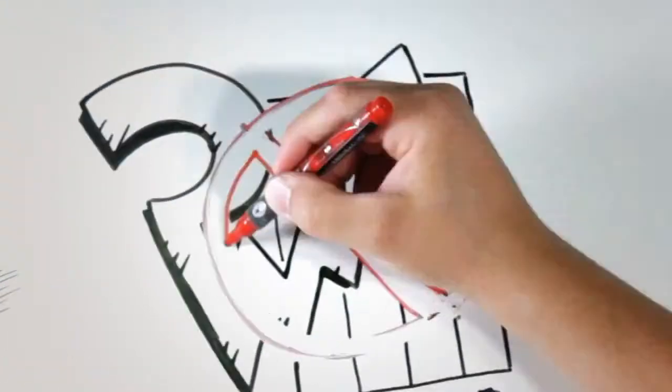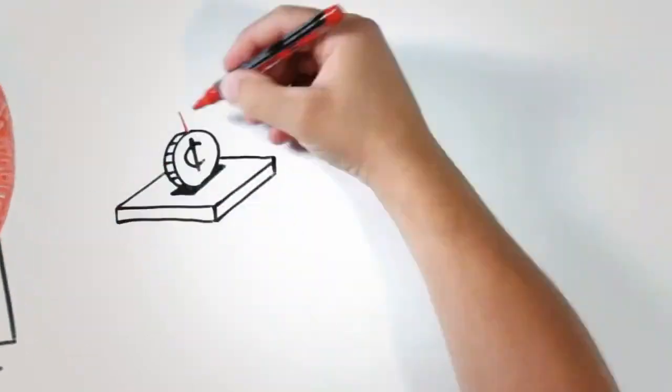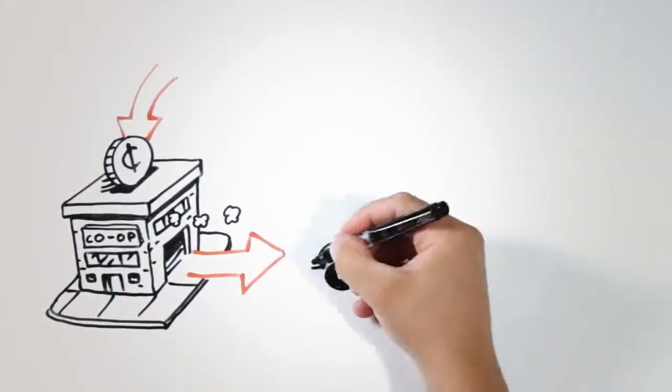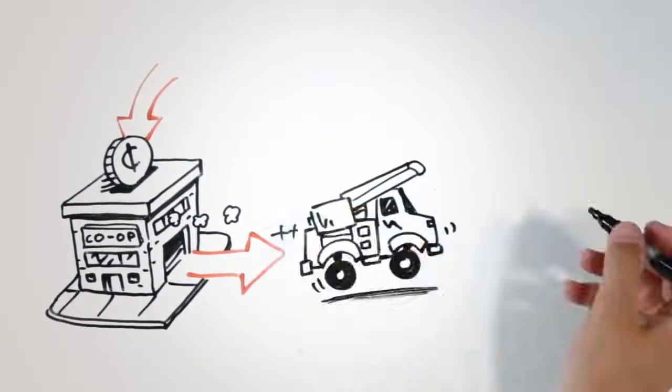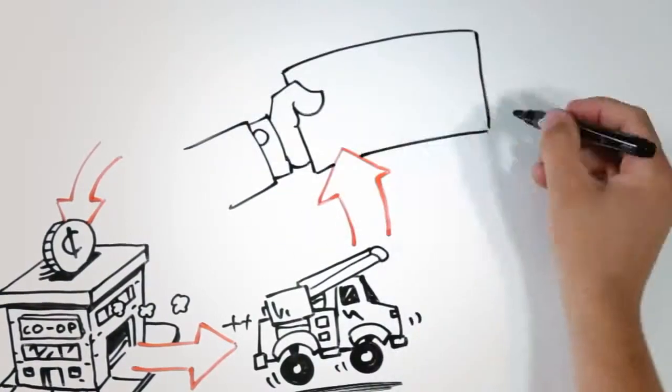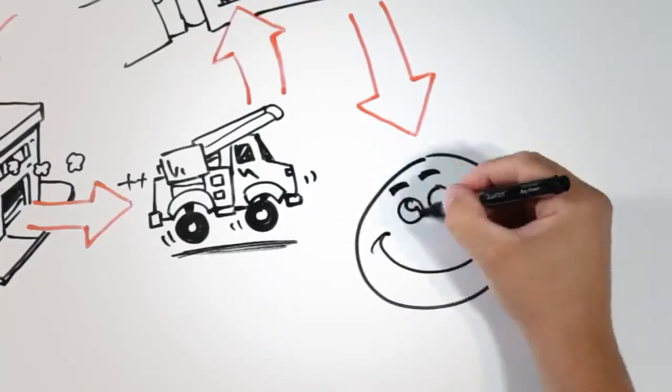First off, cooperatives are not-for-profit. Money comes in from members when they pay their electric bills. Money goes out to pay co-op expenses. A little bit is set aside for emergencies and the future. Any leftover is returned to members. Pretty sweet, huh?